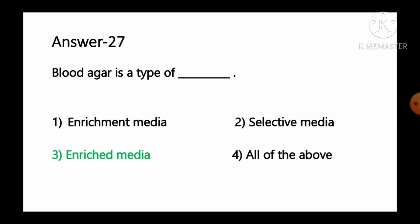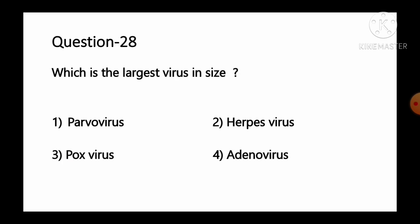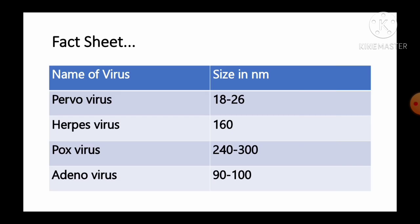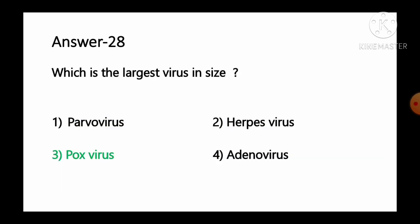Question number 28: Which is the largest virus in size? Options: 1 parvovirus, 2 herpes virus, 3 pox virus, 4 adenovirus. Parvovirus is about 18 to 26 nanometers, herpes virus is around 160 nanometers, pox virus is 240 to 300 nanometers, and adenovirus is 90 to 100 nanometers. So pox virus is the largest among the given options. Option number 3, pox virus, is the correct answer.